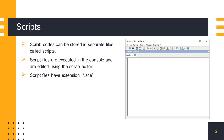Scripts are external files that are used to store program codes or instructions, which we can edit through the text editor and execute the script in the console. SciNotes is a text editor within Scilab for writing program codes and has good code formatting capabilities.